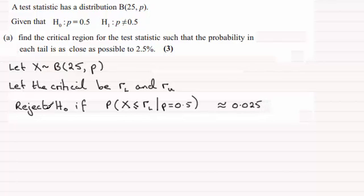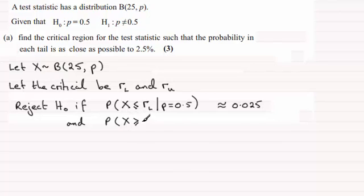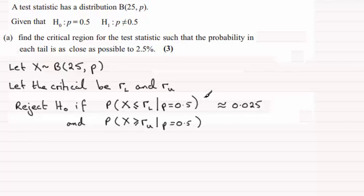We're also going to reject if the probability that X is greater than or equal to the upper critical value RU, given that P equals 0.5, turns out to be as close as possible to two and a half percent — 0.025. I'm going to number these statements one and two.